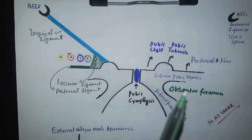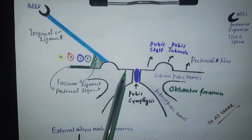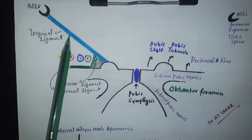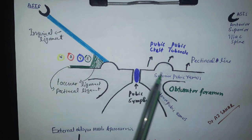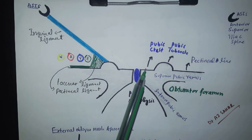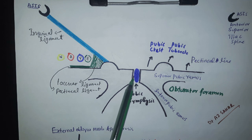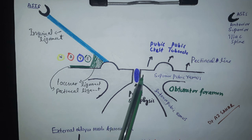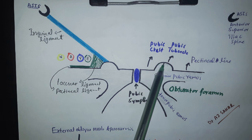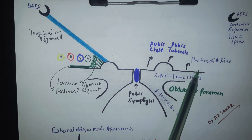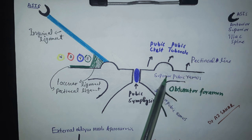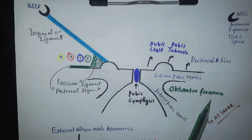Inguinal region anatomy. Before we talk about the ligament, let's first understand the pubic bone. This is the pubic symphysis, which is the joint between the two pubic bones. This is the pubic crest, this bulged part is called the pubic tubercle, and this is called the pectineal line. This is called the superior pubic ramus, this is called the inferior pubic ramus, and this is the obturator foramen.